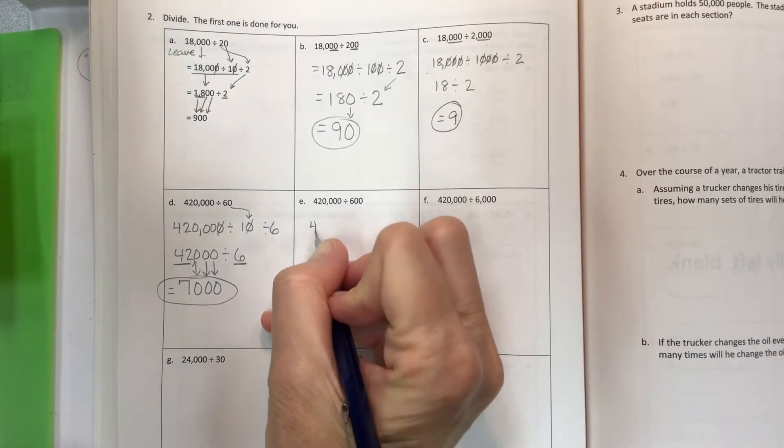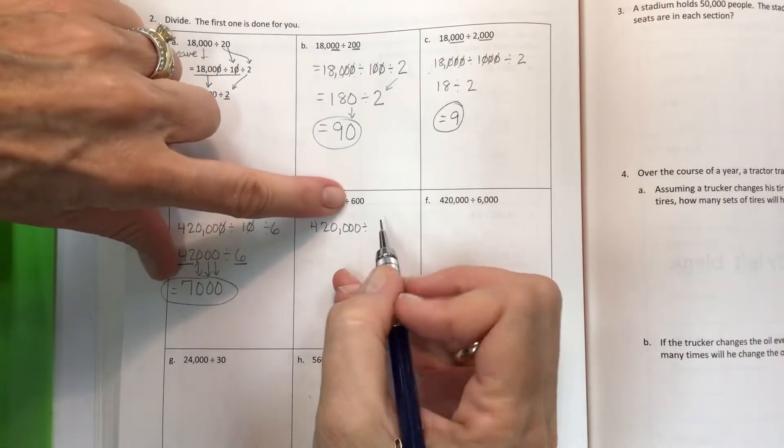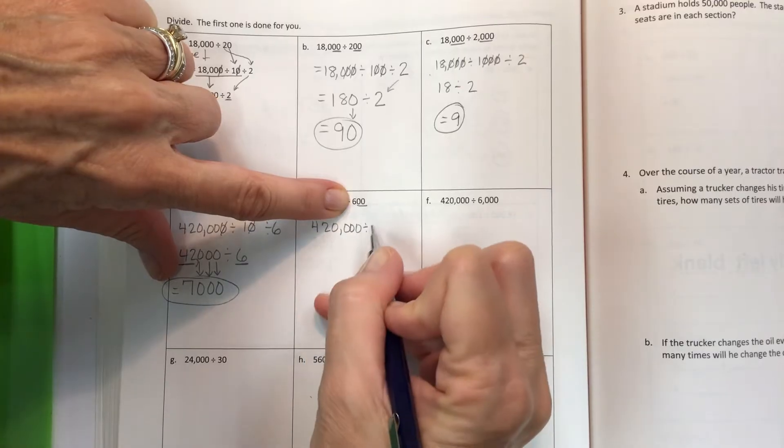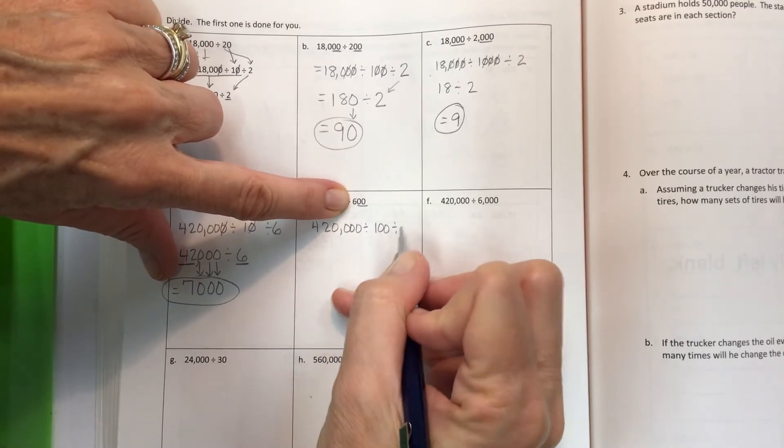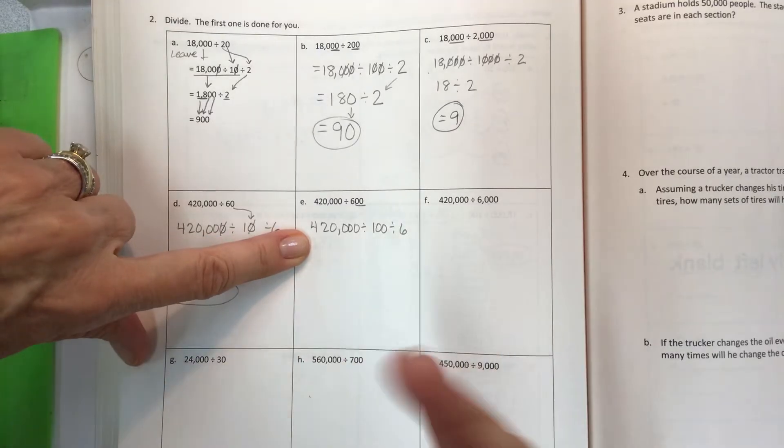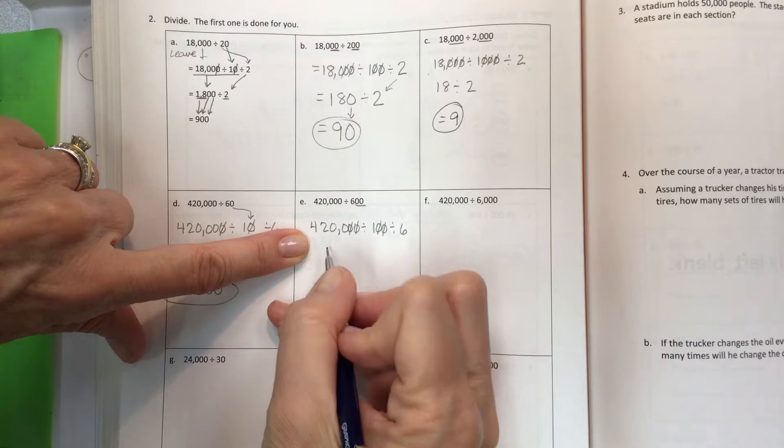The next one has the same dividend but a larger divisor. This one has two zeros, and we have enough zeros here, so write 100 divided by 6. As always with your homework, you should be trying this on your own before you just copy from the video.